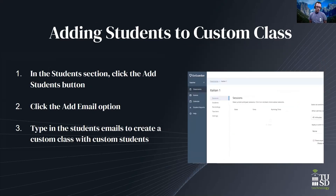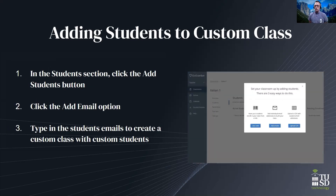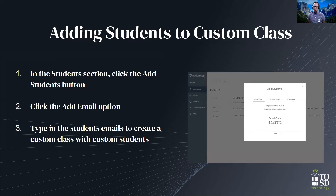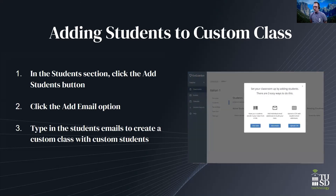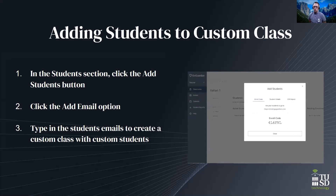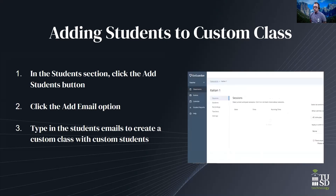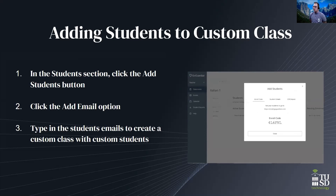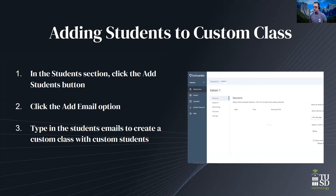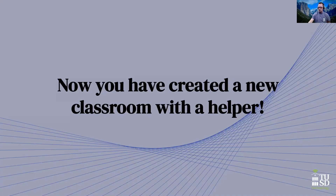Adding students to your custom class is similar. Students automatically get added to your Clever-synced class because it pulls from your roster in Clever. But if you created a custom class, you have to add them yourself. In the student section, click on add students, and you'd most likely click the email option, then type in the student's email to add them. And that's it — creating a new classroom with a helper is that simple.